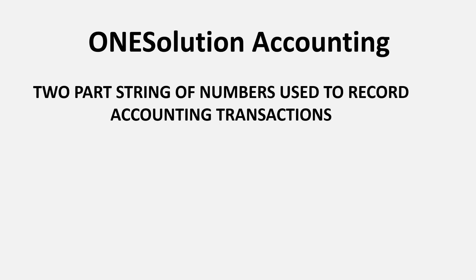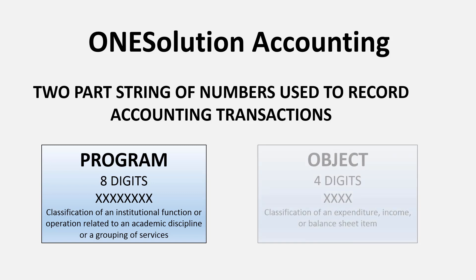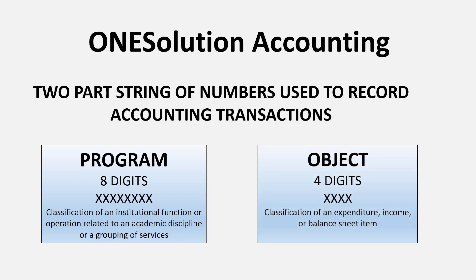One Solution Accounting uses a two-part string of numbers to record accounting transactions. The first part is the program code — eight digits, a classification of an institutional function or operation related to an academic discipline or grouping of services. The second part is the object code — four digits, a classification of an expenditure, income, or balance sheet item.